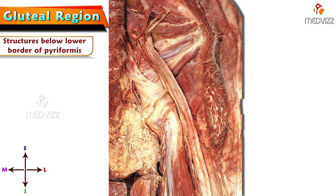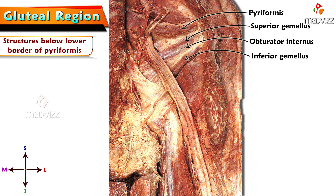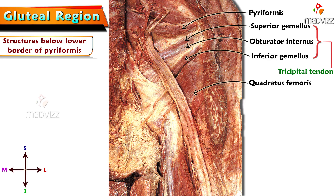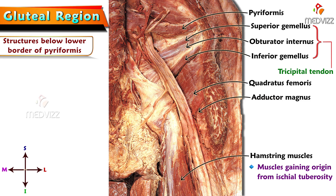Before identifying the neurovascular structures, we identify the muscles forming the lower part of the gluteal region deep to gluteus maximus. Below the lower border of piriformis there are three muscles together: obturator internus along with the gemelli muscles — superior gemellus and inferior gemellus. All three muscles, namely obturator internus, superior gemellus, and inferior gemellus, together form the tricipital tendon before their attachment. The muscle seen below the tricipital tendon is quadratus femoris. Below the quadratus femoris, a little part of adductor magnus is shown, and medially we can observe the hamstring muscles gaining origin from the ischial tuberosity.